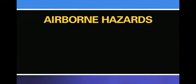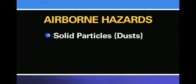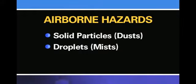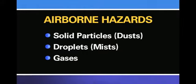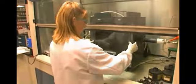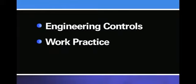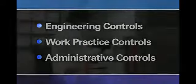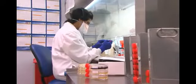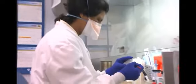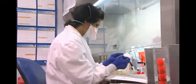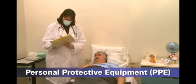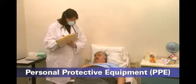Airborne hazards may be solid particles like dusts, droplets like mists, or gases. When such hazards are present in your workplace, your employer must control them through engineering controls, work practice controls, and administrative controls. When workers cannot be adequately protected through these controls, employers must provide, and workers must use, personal protective equipment, also known as PPE.